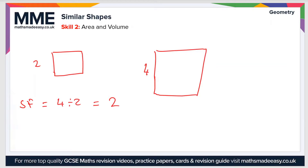But then suppose we wanted to know what the area scale factor was. The area scale factor — we'll call it SF with a subscript A — is found by squaring the linear scale factor, which is the scale factor we found for the length. So the area scale factor is 4.